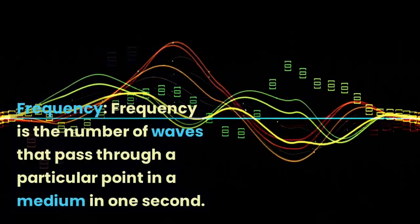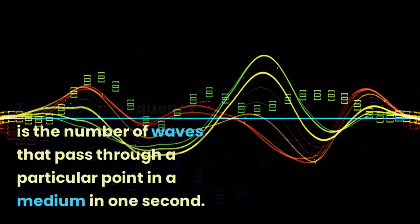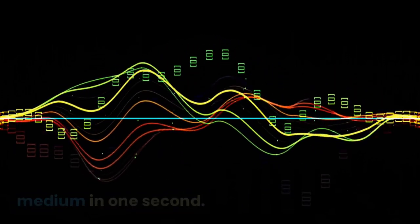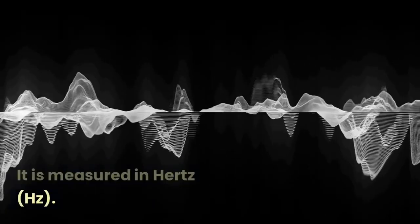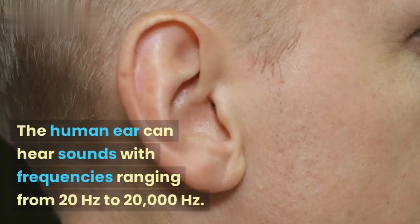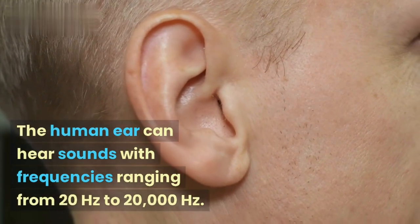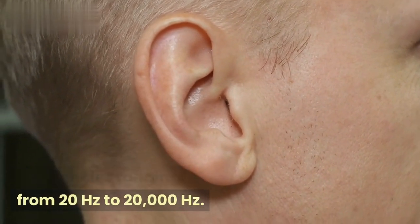Frequency. Frequency is the number of waves that pass through a particular point in a medium in one second. It is measured in hertz (Hz). The human ear can hear sounds with frequencies ranging from 20 hertz to 20,000 hertz.